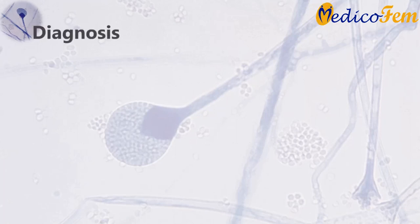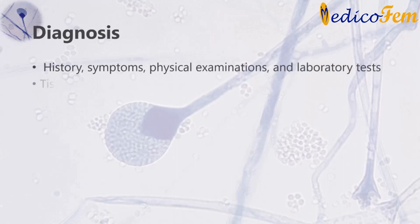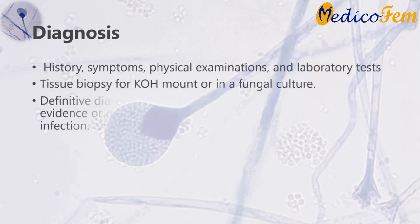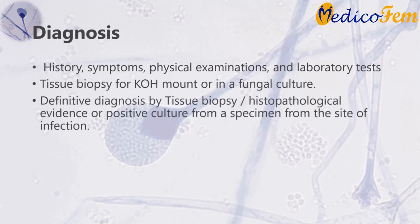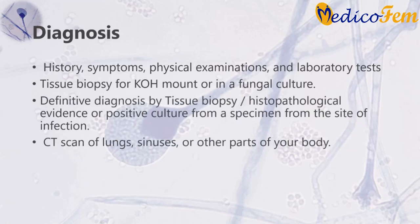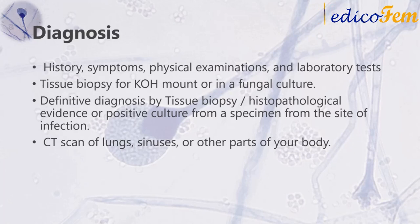Diagnosis of mucormycosis involves history, symptoms, physical examination, and laboratory tests. Definitive diagnosis typically requires histopathological evidence or positive culture from a specimen from the site of infection. Tissue biopsy, in which a small sample of affected tissue is analyzed in a laboratory under a microscope with KOH mount slide examination or in a fungal culture, and CT scan of lungs, sinuses, or other parts of the body depending on the location of the suspected infection.